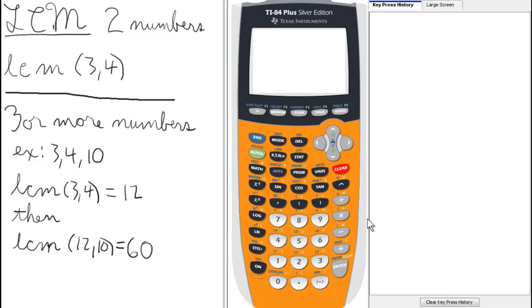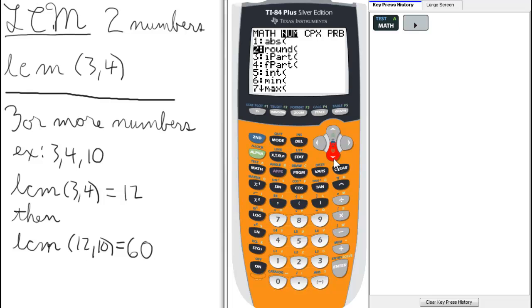To find the least common multiple, or the LCM of two numbers, what we do is press math, scroll over to number, and scroll down to 8. Now we could just press 8, but some people are not used to pressing numbers for selections they don't see. So press LCM and enter.